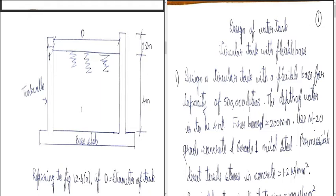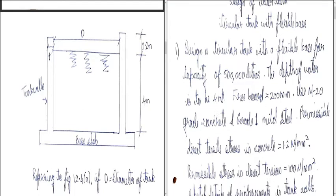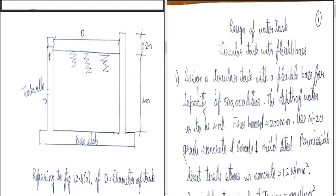We have three designs of water tanks: one is a circular tank with flexible base, another is a circular tank with rigid (fixed) base, and the rectangular water tank. Today we will take up an example of a circular tank with flexible base.